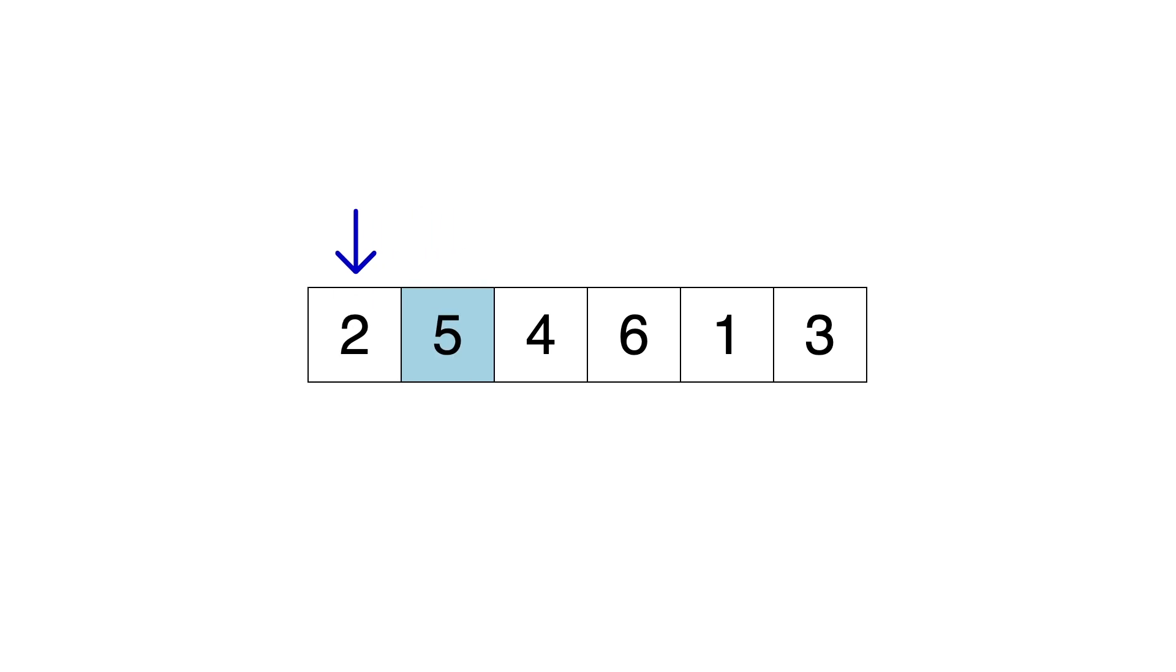Two is less than five, so we move it to the left, and now the first two items in the array are sorted. Now we move on to the third item. Four is less than five, so we move it to the left, but four is not less than two, so now we stop, and four is in the correct position.